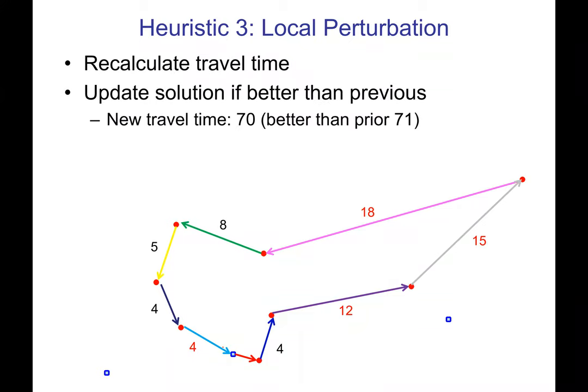Now I recalculate the travel time — in this case it turns out to be 70 minutes, which is better than my previous 71. So it's a better solution and I update. If the travel time was worse, I wouldn't update — just say that was not a good perturbation, move on, try the next one. These iterative improvement algorithms are most powerful when your perturbation is pretty fast. If your perturbation is fast, you can try thousands, hundreds of thousands, even millions of perturbations. It doesn't matter if 99% aren't very good — if 1% are good and you try a million, you'll find a lot of improvements.